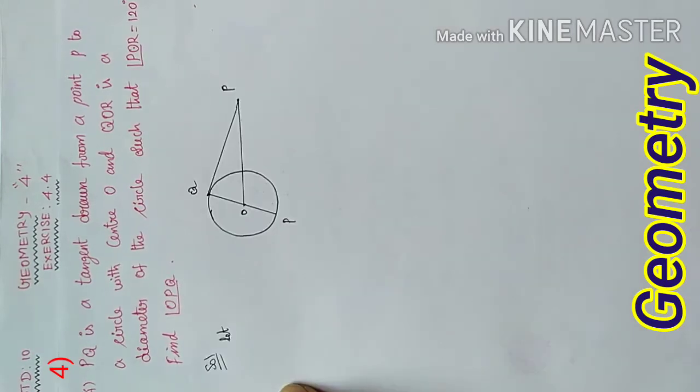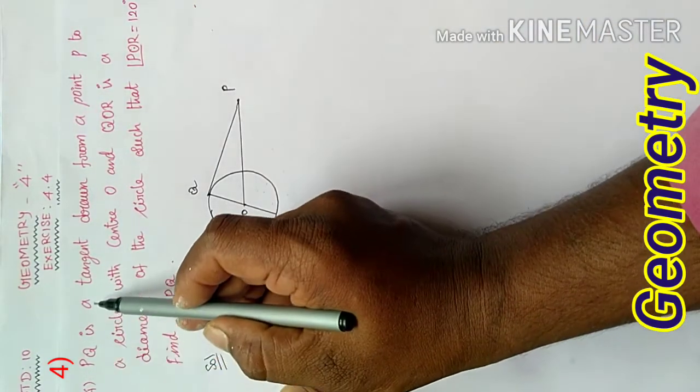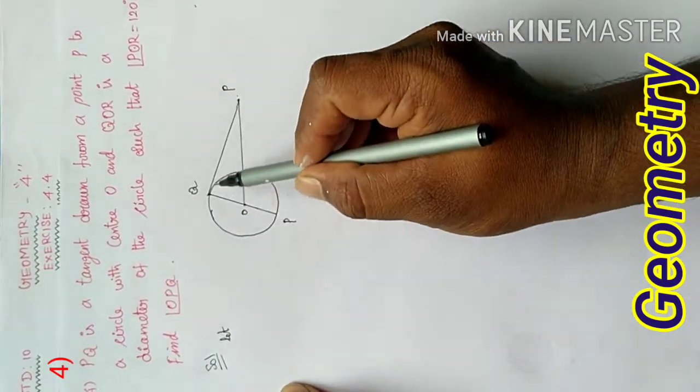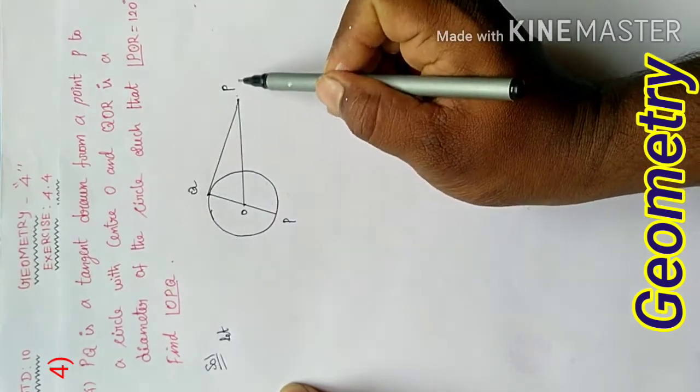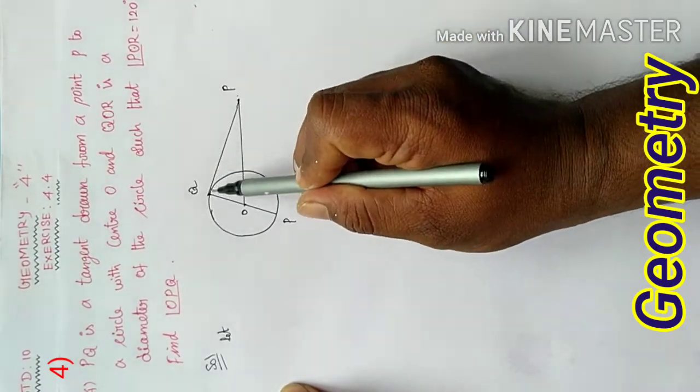Students, first one, PQ is a tangent. PQ is a tangent to the circle at point Q. When a point on the circle is joined to the external point, we get the tangent.